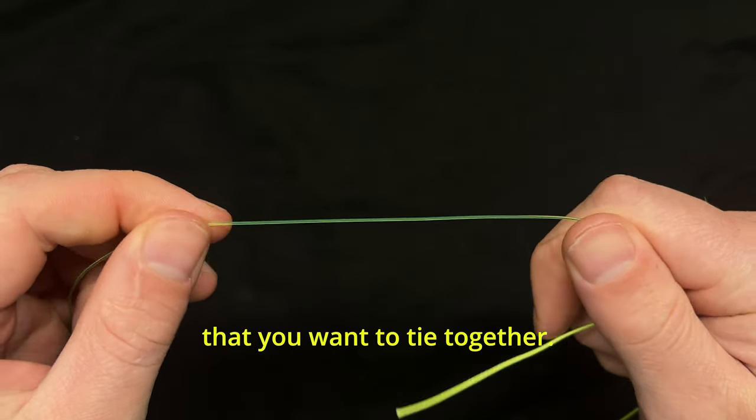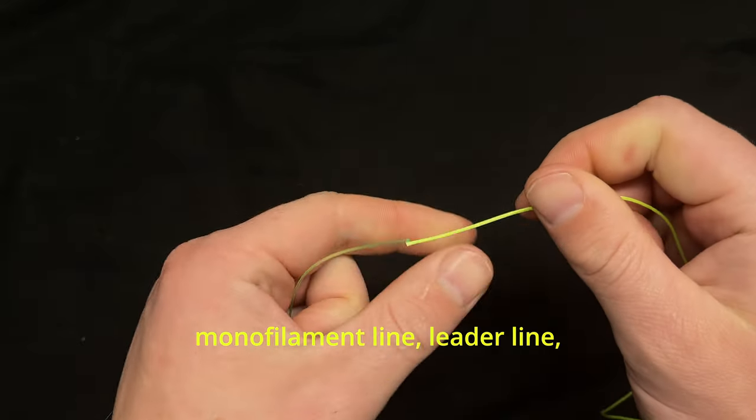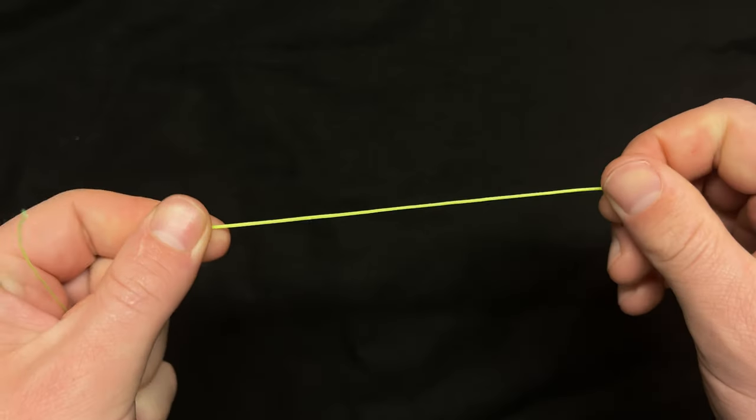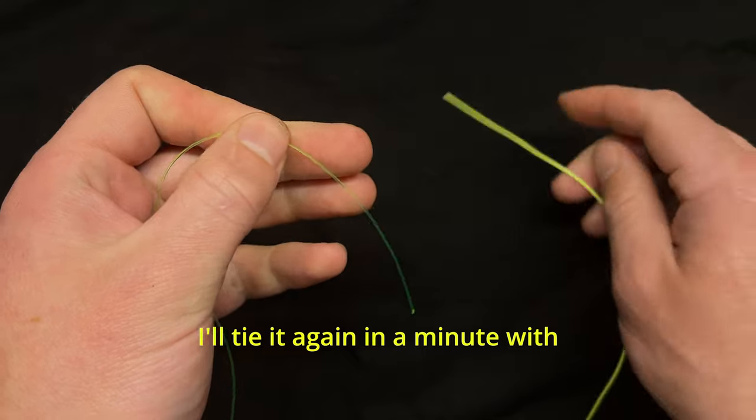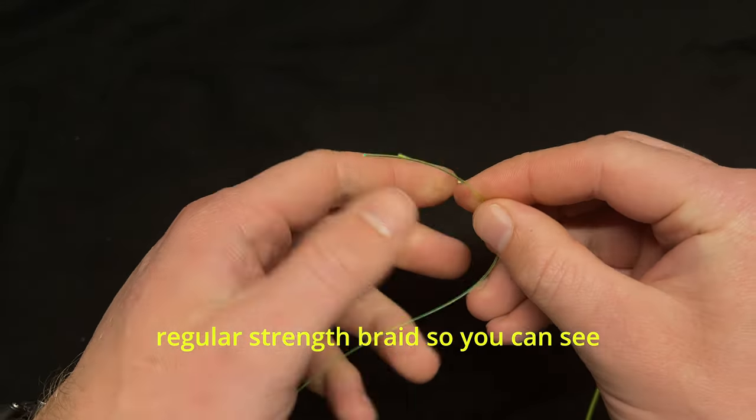You'll get your two lines that you want to tie together. In this case we have 50 pound monofilament leader line and this high contrast line which represents our braided line. I'll tie it again in a minute with regular strength braid so you can see what that looks like.